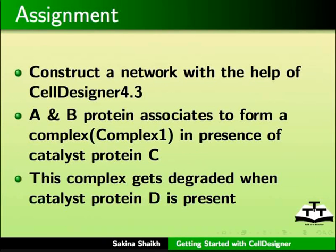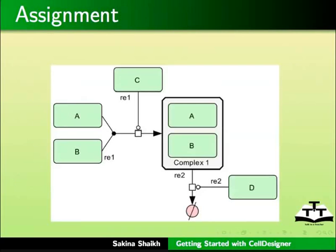As an assignment, construct a network using CellDesigner version 4.3. In this network, proteins A and B associate to form a complex (Complex 1) in the presence of catalyst protein C. This complex gets degraded when catalyst protein D is present. You should get a network like the one shown.